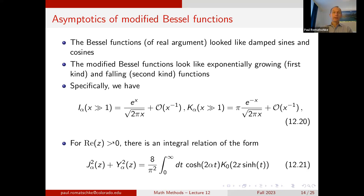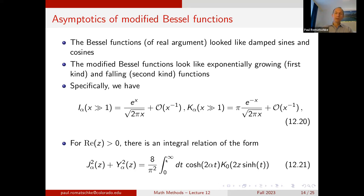For complex argument there is also an integral relation between the Bessel functions of the first and second kind and the modified Bessel functions. Similar somewhat to sin²+cos²=1, here J_α²(z) + Y_α²(z) equals an integral from 0 to ∞ of cosh(2αt) K_0(2z sinh(t)) dt.